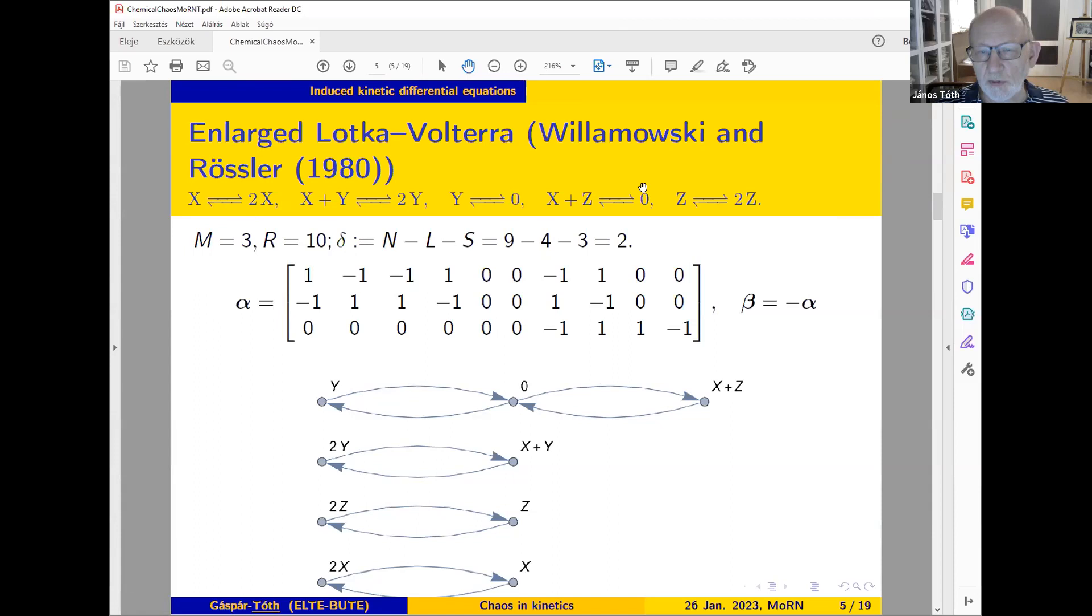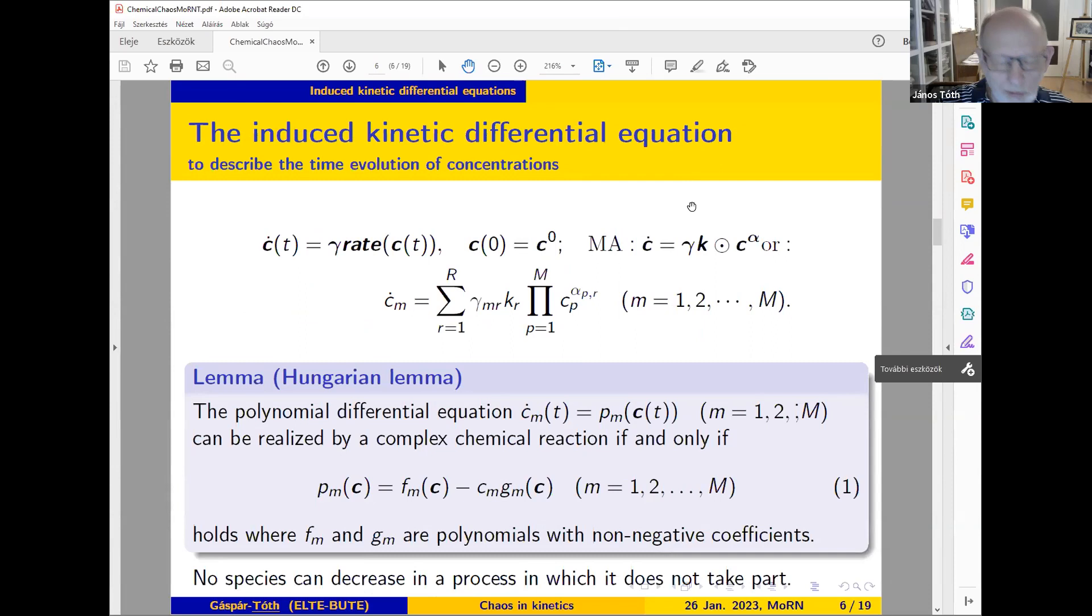We draw a graph from the given elementary reaction steps by writing down once all linear combinations of species—these are called complexes. Then we draw arrows representing the reaction steps. What we get is a disconnected graph, in this case with four connected components. Finally, c is the rank of gamma, the stoichiometric matrix. To use chemical terms, c is the number of independent reaction steps. If you subtract four and c from the number of complexes, you receive two—this is the deficiency of the system. We are very happy if this is zero or one.